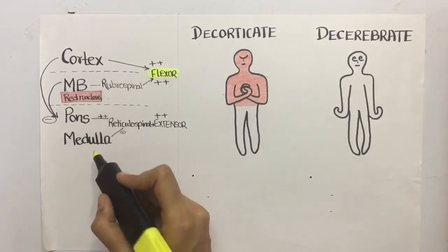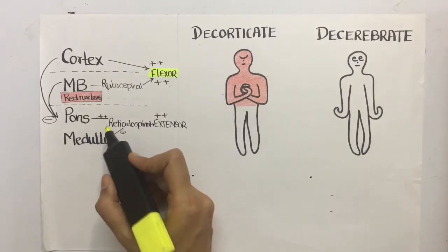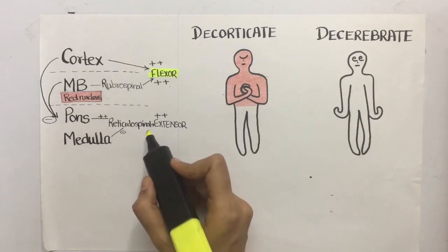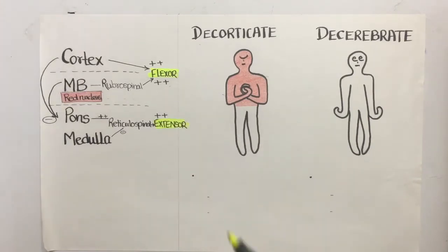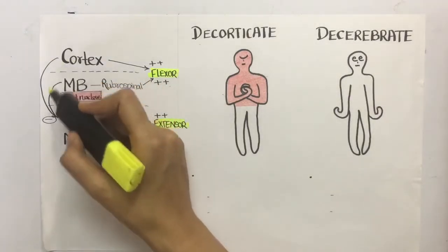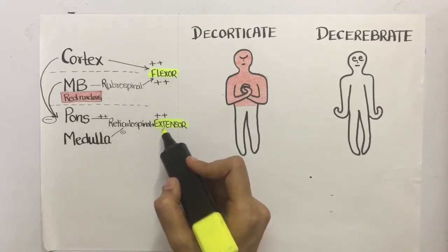From the pons and medulla we have the reticulospinal fibers, now the pontine reticulospinal fibers are excitatory and they dominate, so they cause extension. The fibers from the cortex and midbrain are also inhibitory to the reticulospinal fibers.